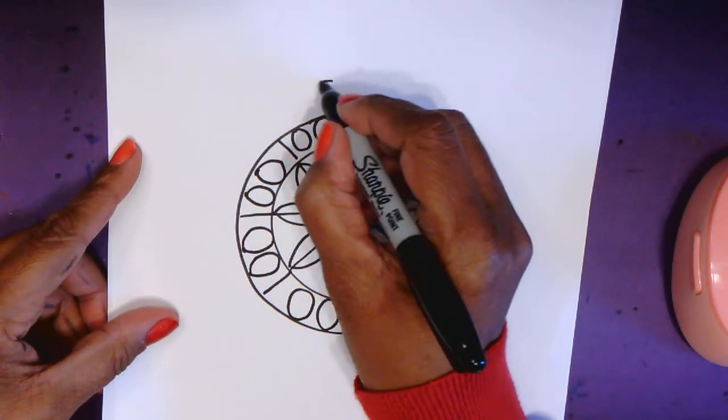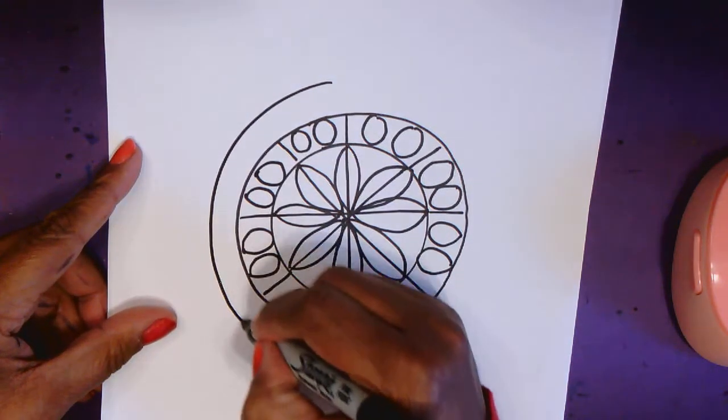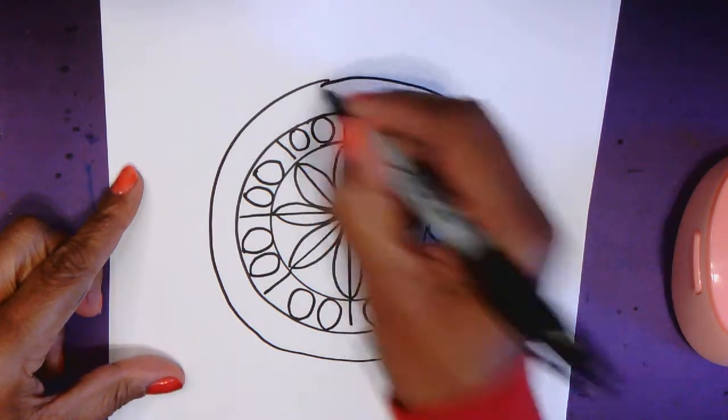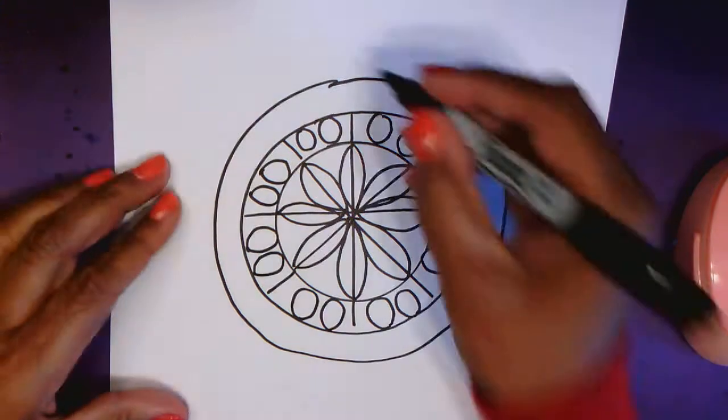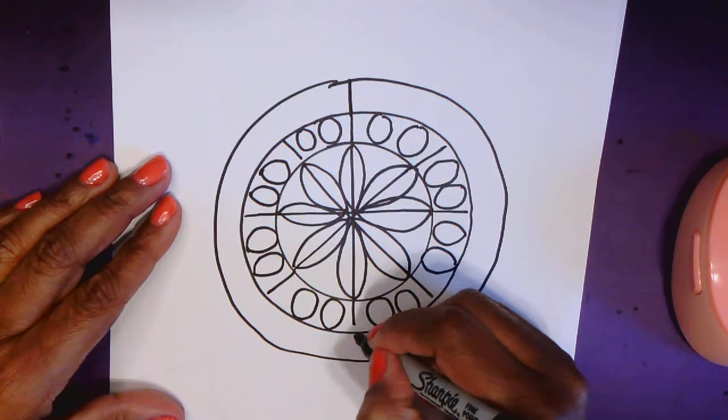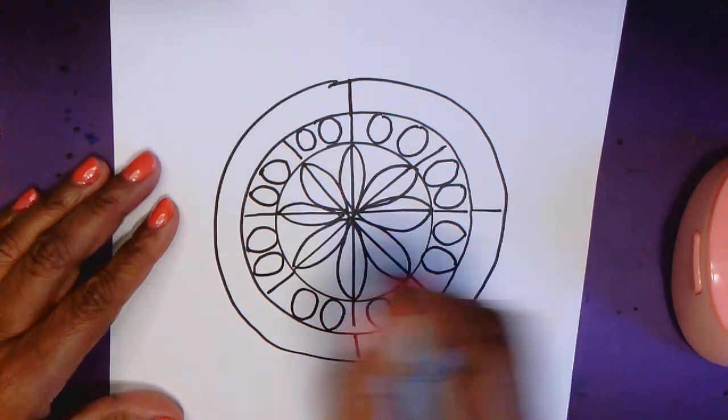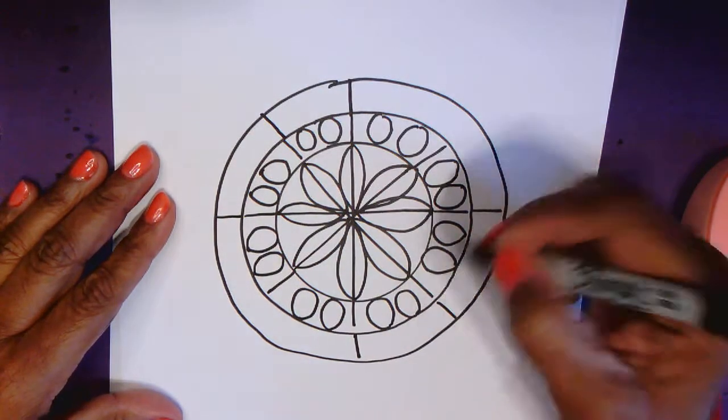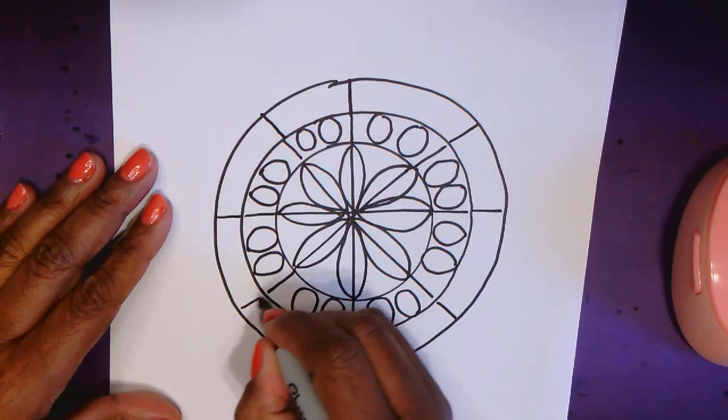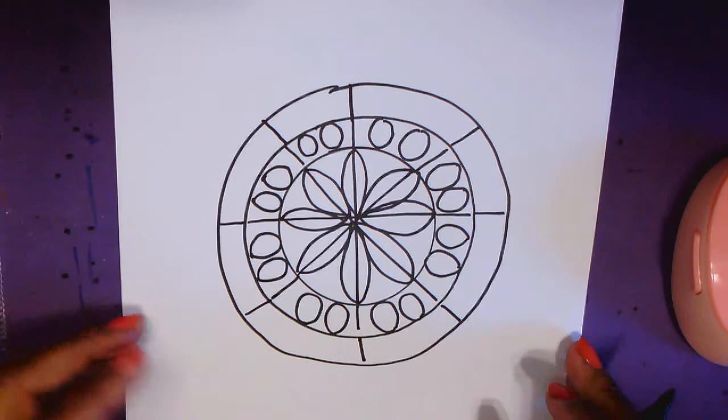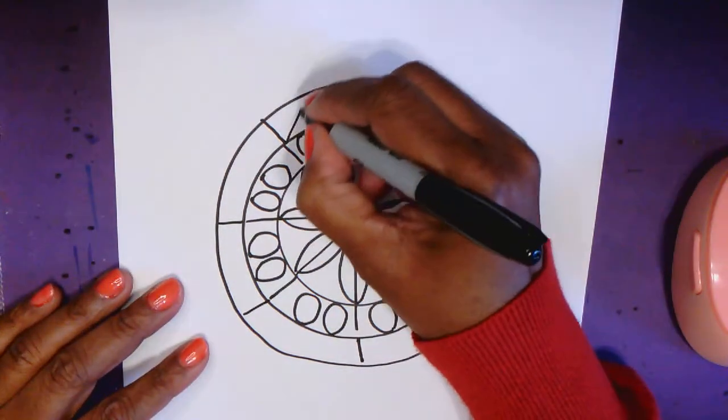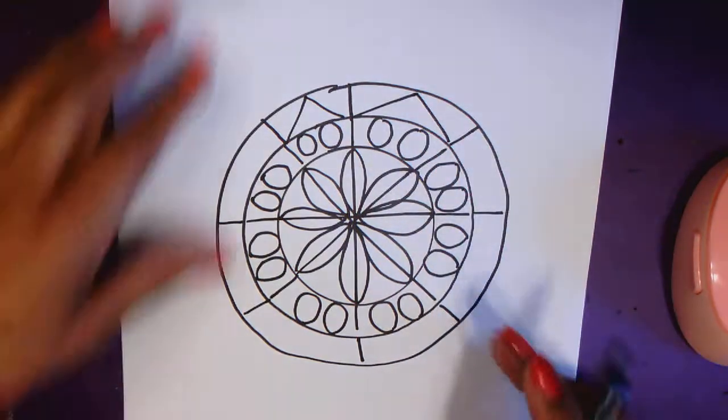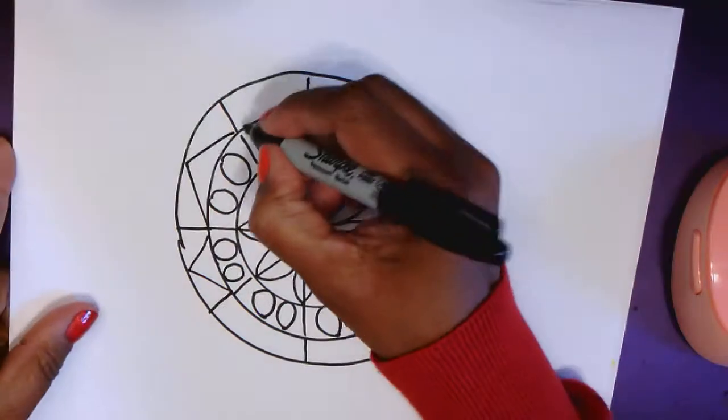Alright so so far so good. Now it's time for another circle. Remember that X. Alright we're just going to carry it through. Okay what shape shall we use next? Maybe I'm going to just do one big triangle in each section.